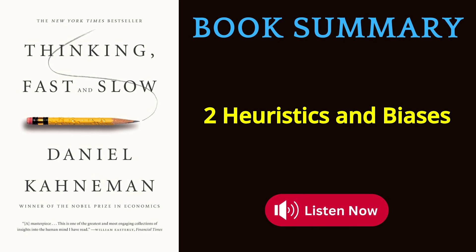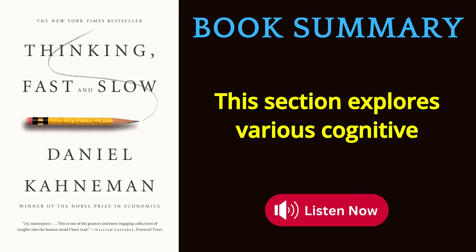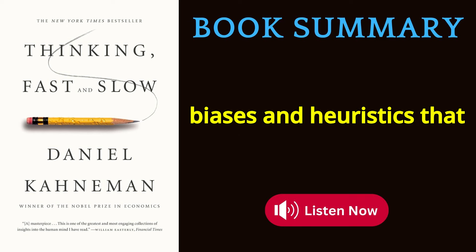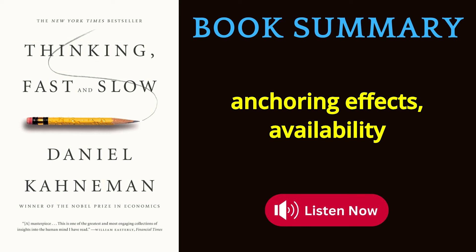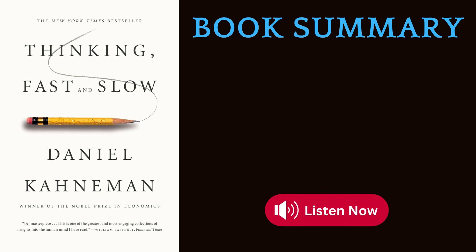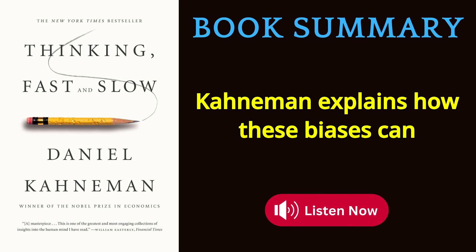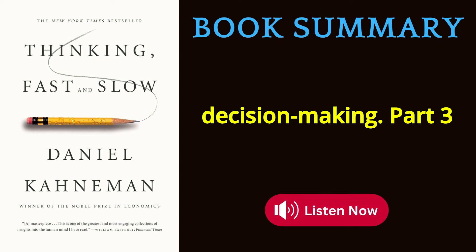Part 2: Heuristics and Biases. This section explores various cognitive biases and heuristics — mental shortcuts — that influence our thinking. These include anchoring effects, availability heuristic, substitution, and others. Kahneman explains how these biases can lead to errors in judgment and decision-making.